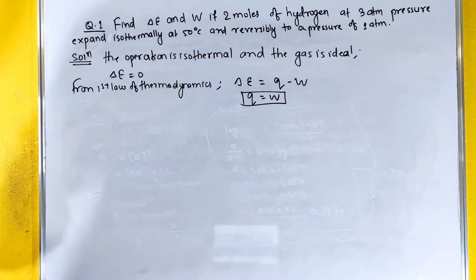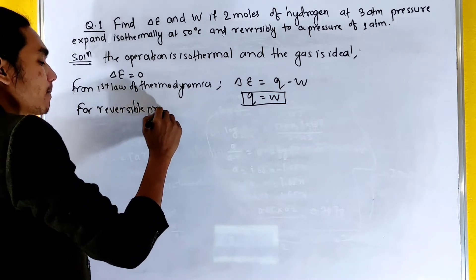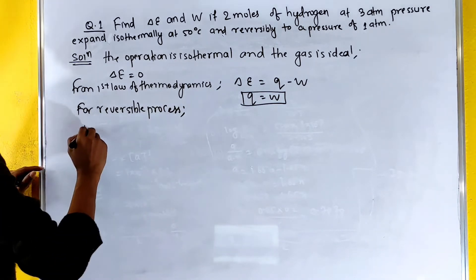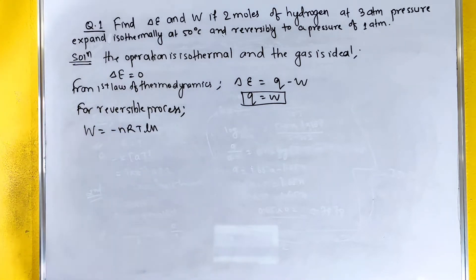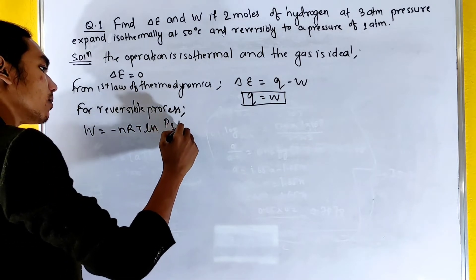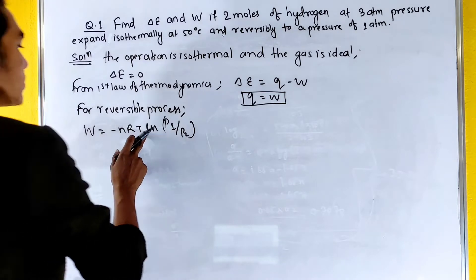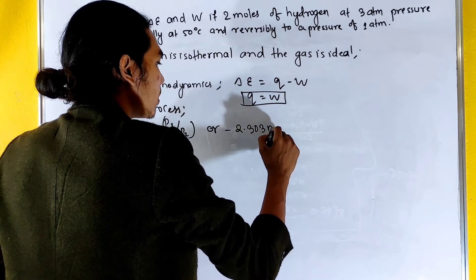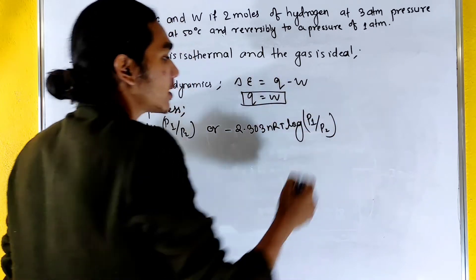For a reversible process, the work done W equals minus nRT ln(P1/P2), which can also be written as minus 2.303 nRT log(P1/P2).